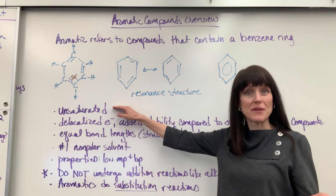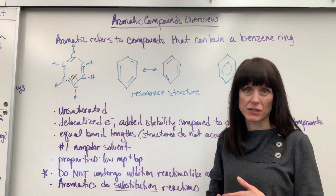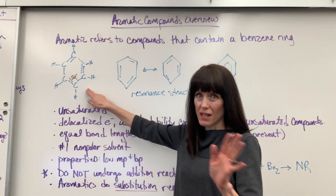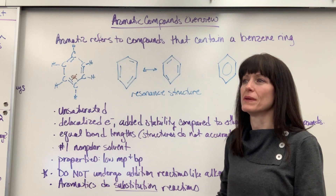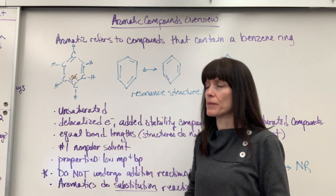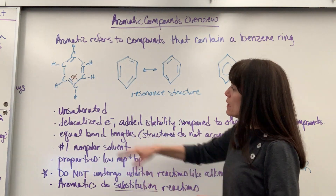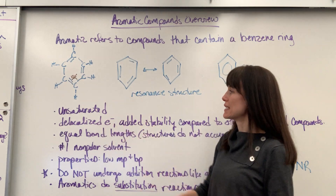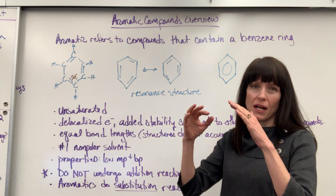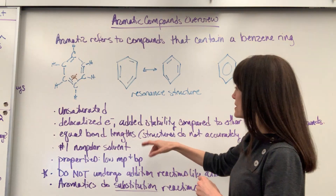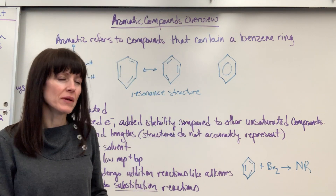This is going to be unsaturated because the carbons don't have the maximum number of hydrogens around them — this is not a cyclohexane, which would be saturated. It's unsaturated because of that oscillating double bond. Something really unique about benzene is it has delocalized electrons, meaning they're going to sit above or below the molecule itself, and that creates added stability compared to other unsaturated compounds.